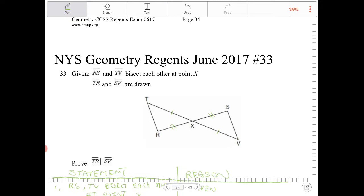And because TV and RS, they're straight lines and they intersect each other, they will form vertical angles. So therefore those angles are going to be congruent. So triangle TRX will be congruent to triangle VSX.